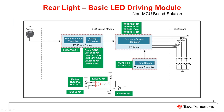This slide shows a basic LED driving module for a rear lamp. The LED strings for the different light functions get driven by a constant current regulator. On the input side, there is a reverse voltage protection and a voltage pre-regulator to provide a constant voltage to the LED drivers. A temperature sensor can be added to implement temperature derating. Discrete LED driver solutions can be used as well.